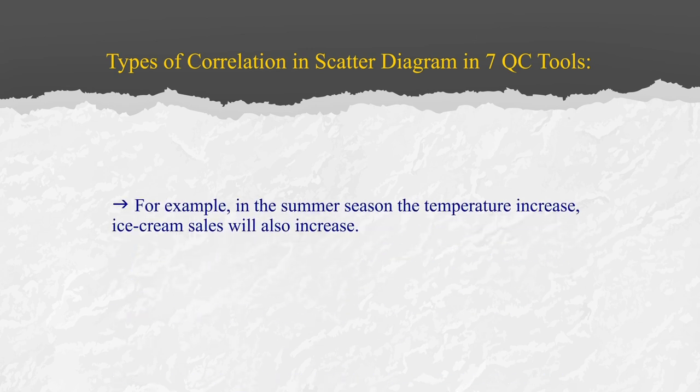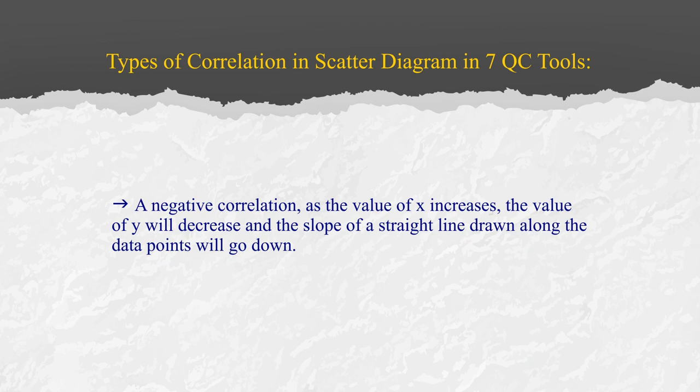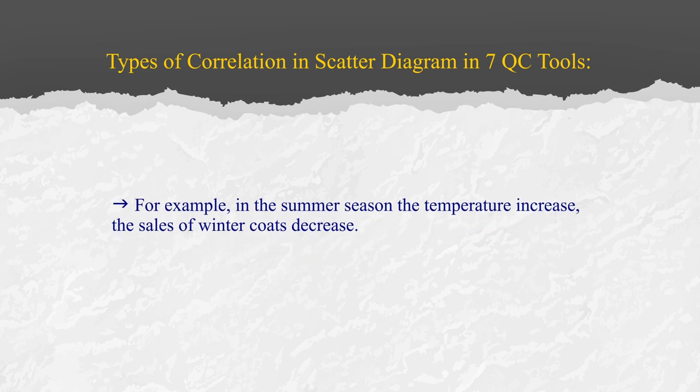For example, in summer when the temperature increases, ice cream sales will also increase — this is a positive correlation. For negative correlation, as the value of X increases, the value of Y decreases, and the slope of the straight line along the data points will go down. For example, in summer when the temperature increases, the sales of winter coats decreases.